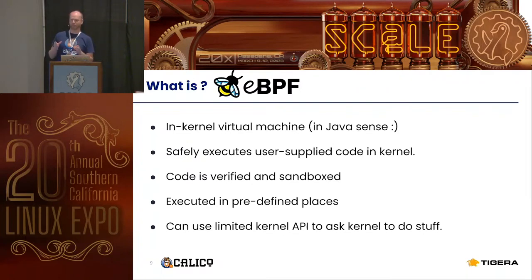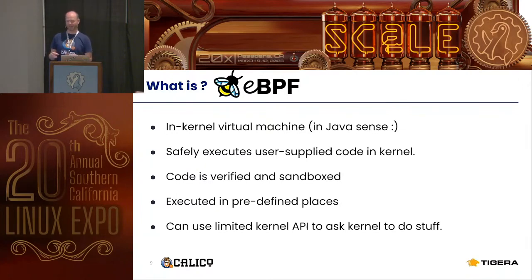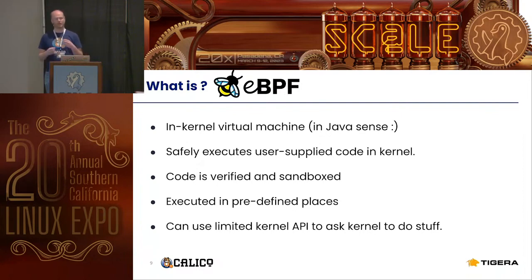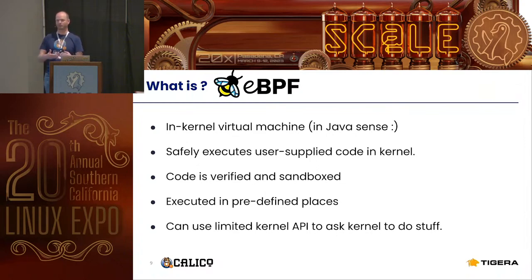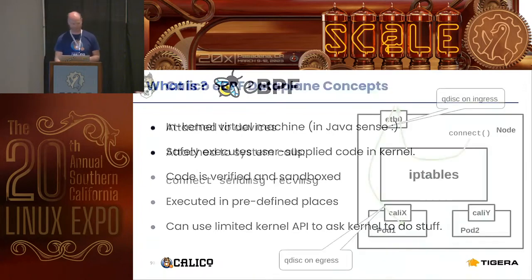eBPF only runs in certain places in the kernel called hooks, which are in well-defined positions. In those hooks the code can ask the kernel to do stuff on its behalf, but only through a well-defined API, and certain things you can do in some hooks and certain things you can't. It is a very flexible tool that allows us to run kernel-mode code on customers' systems without them being afraid of us causing any harm.